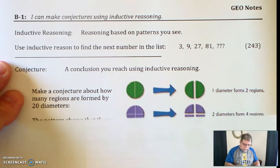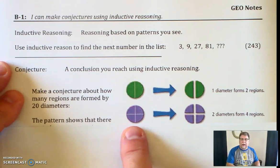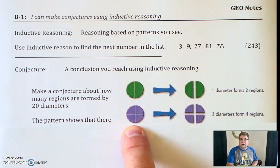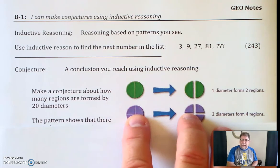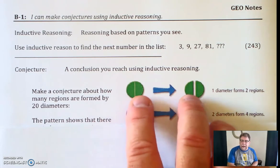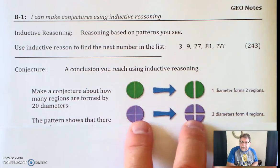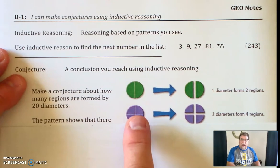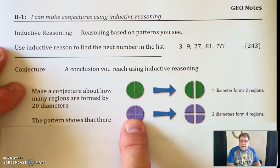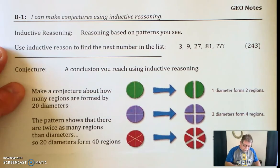Okay, let's do two diameters. So there's two diameters, splits the circle into four regions. If we think about what's going to happen next, basically, you'll notice that it's doubling in size. So that makes sense to say that if you have 20 diameters, you are going to have how many regions?